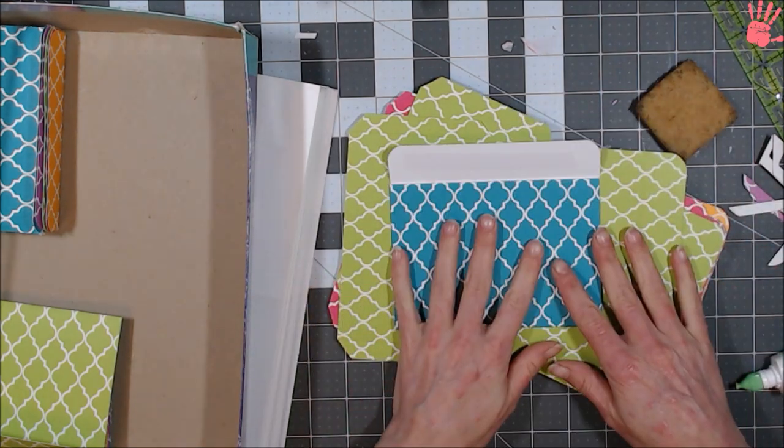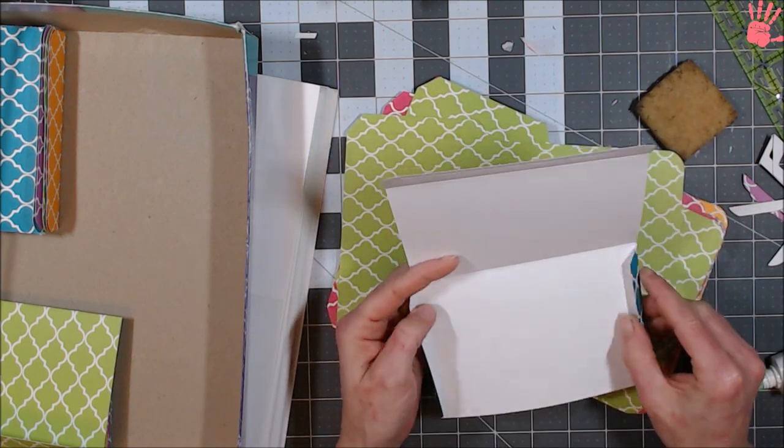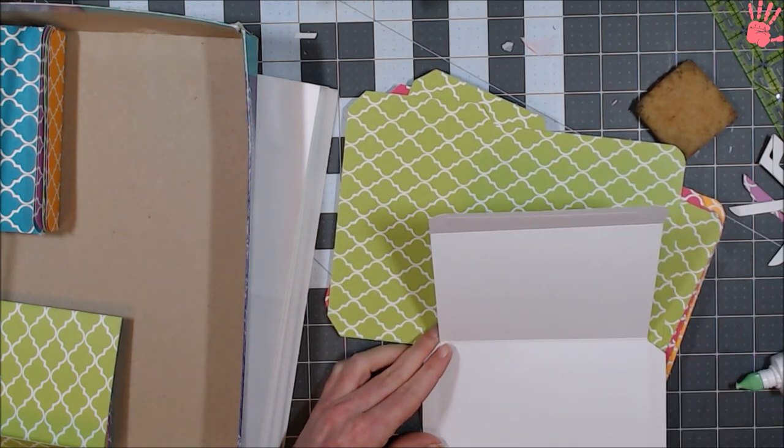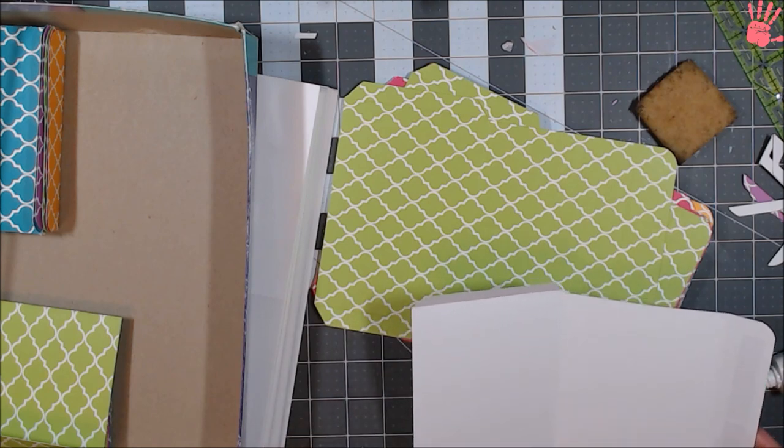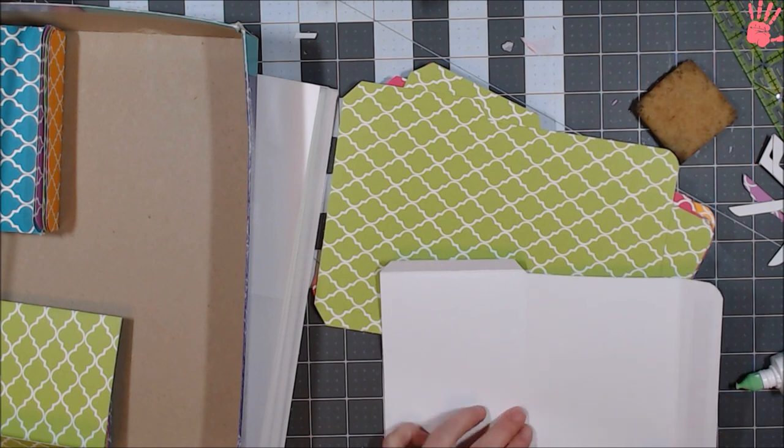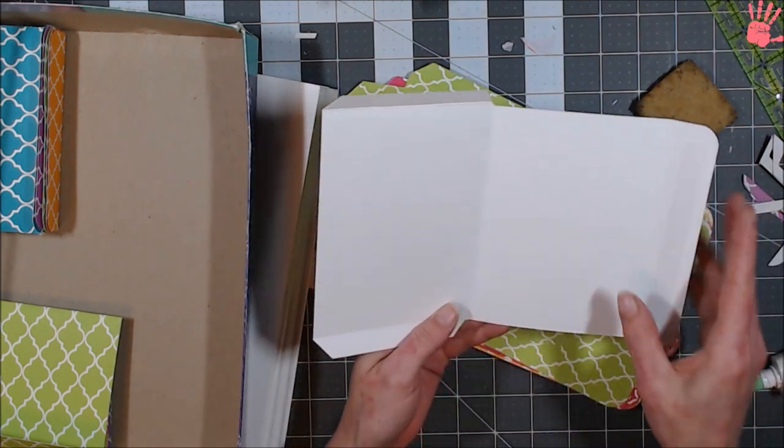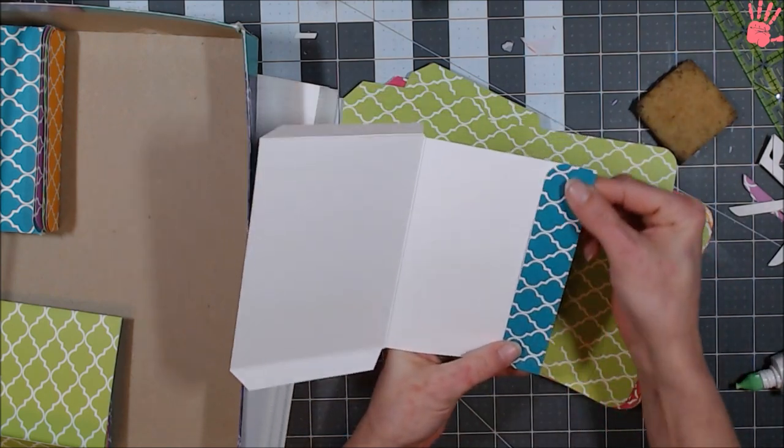So what it started out as was a piece of paper that was, let's see, how wide was this? Six and a half. And it was by ten. So six and a half by ten and I scored it down the center and then I scored it in for where I want my flap.